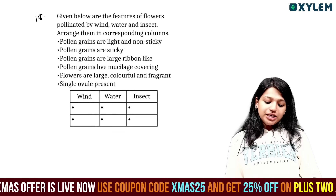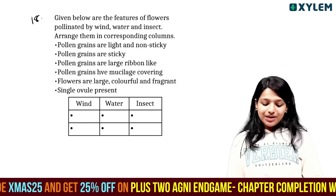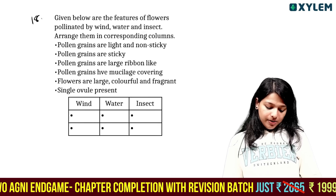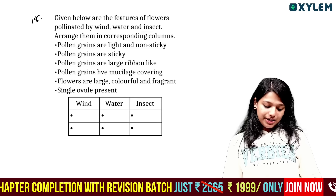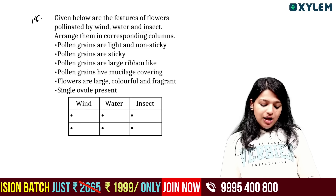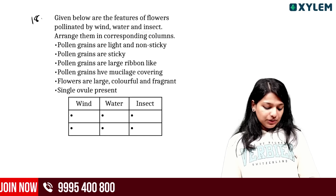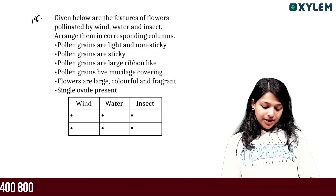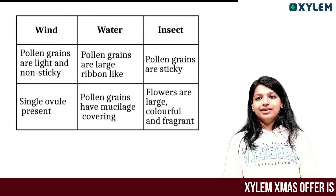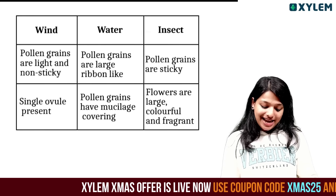Given below are features of flowers pollinated by wind, water, and insects. Arrange them in corresponding columns. Pollen grains are light and non-sticky — wind pollination. Pollen grains sticky — insects. Large ribbon-like pollen and mucilage coating — water. Flowers that are large and colorful — insects.